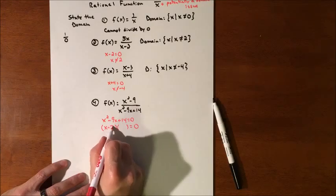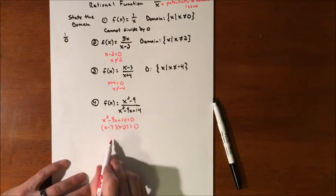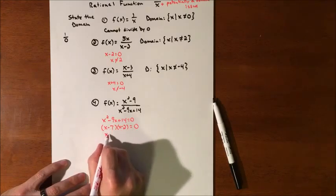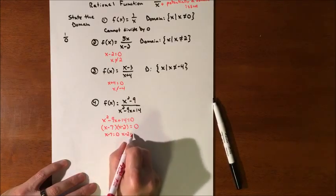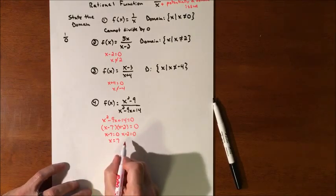X minus seven, X minus two. What multiplies to 14? That adds to negative nine, negative seven, and negative two. And if we set each factor equal to zero and solve it, we'll find our solutions to this quadratic.